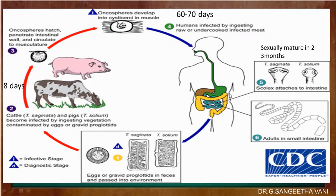When the eggs or segments are passed out with feces into the ground, animals while grazing will swallow these eggs. Once they swallow the eggs, they reach the alimentary canal where the eggs get liberated and enter the gut wall through portal vessels or mesenteric lymphatics. Via the portal vein they enter the liver, then the right side of the heart, then the lungs, then the left side of the heart, finally reaching the systemic circulation. The oncospheres then settle down in muscular and soft tissues such as the tongue, neck, shoulder, ham, and sometimes cardiac muscles.